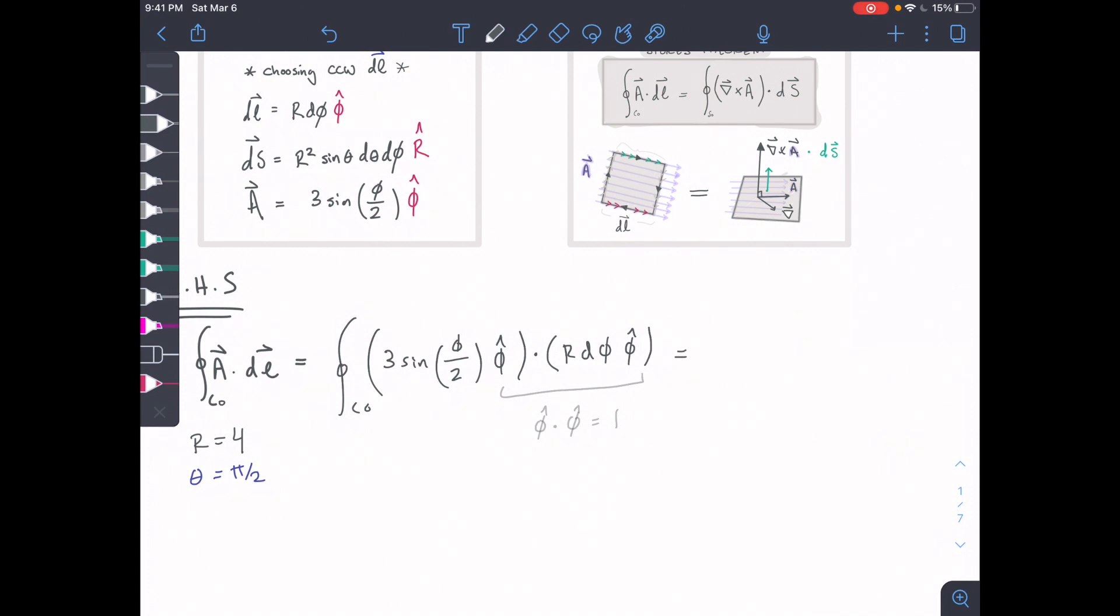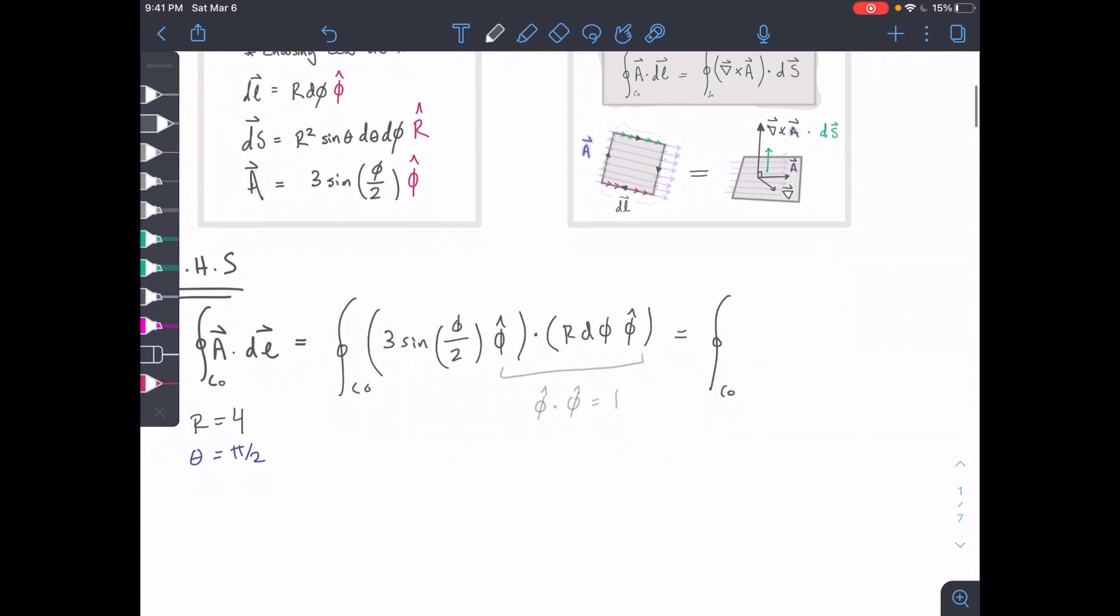We're going to simplify our terms here and we're going to end up with 3 sine of phi over 2, and it's going to be R d phi.